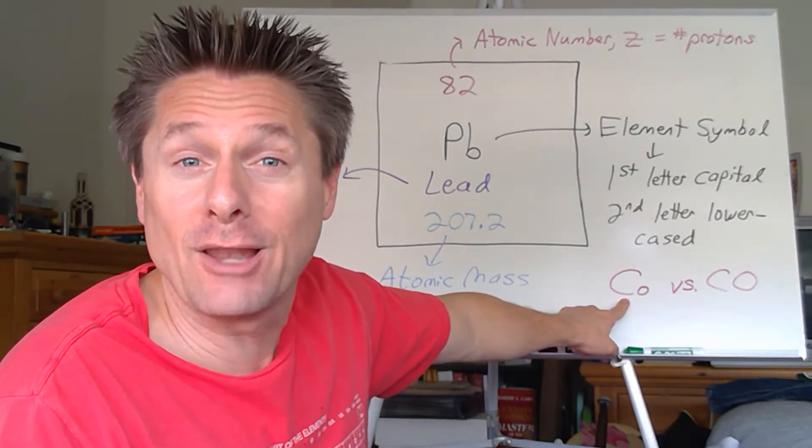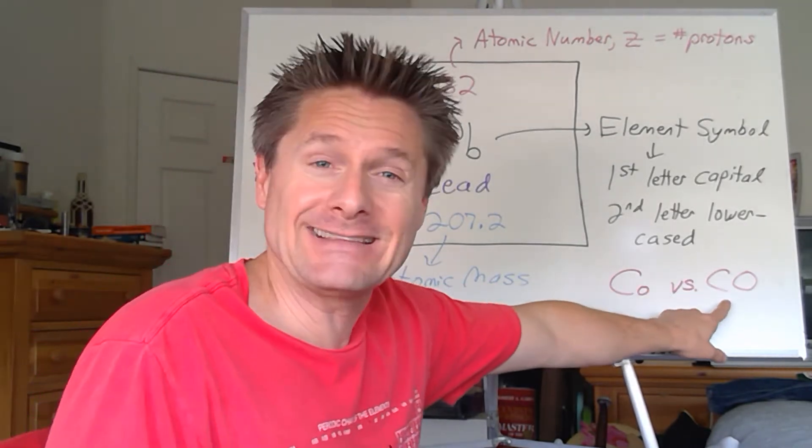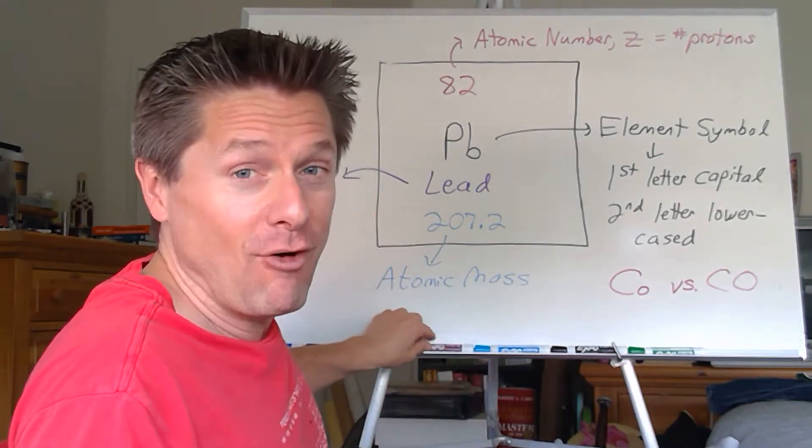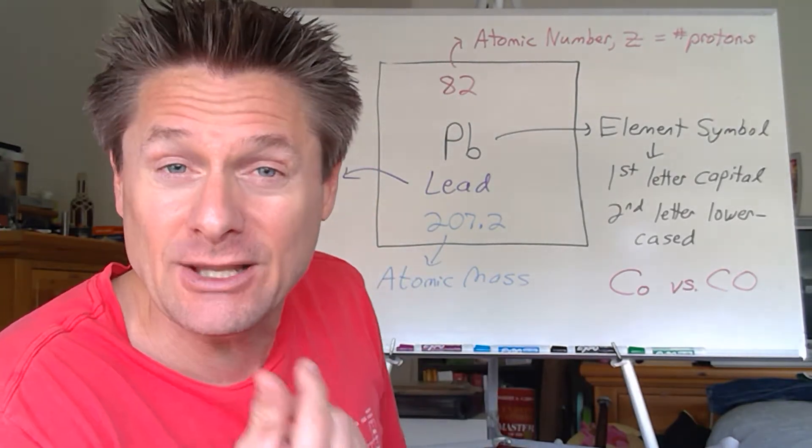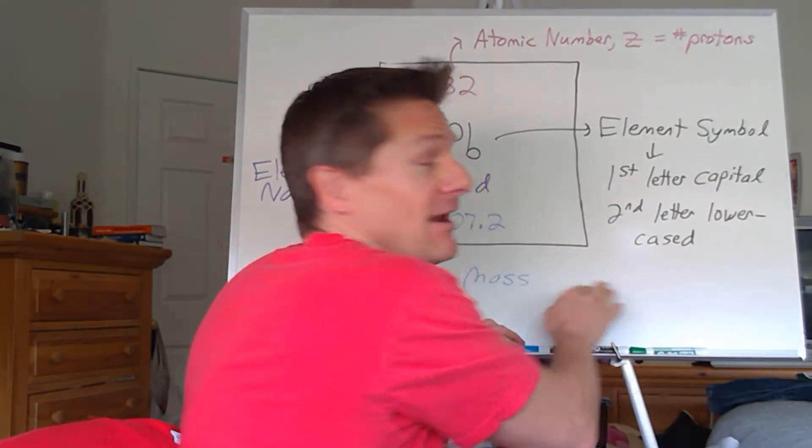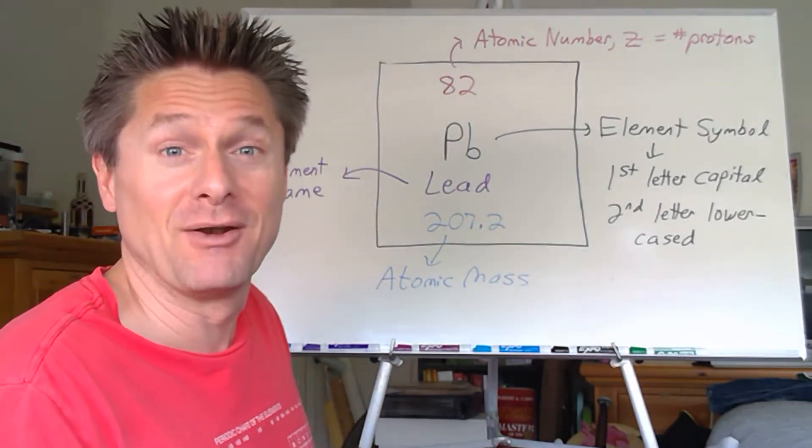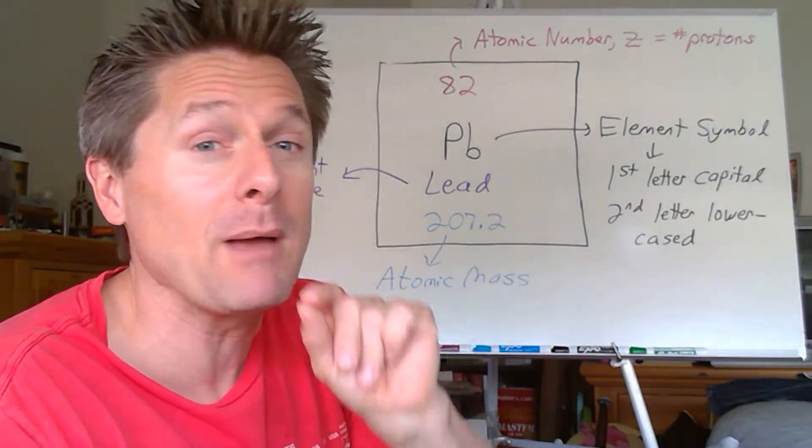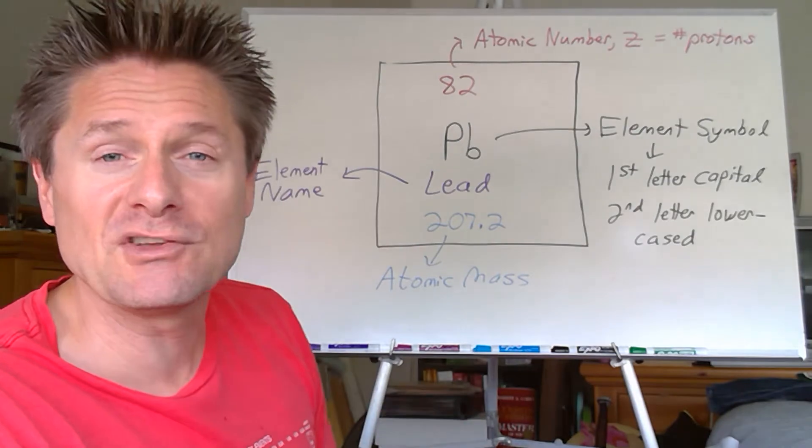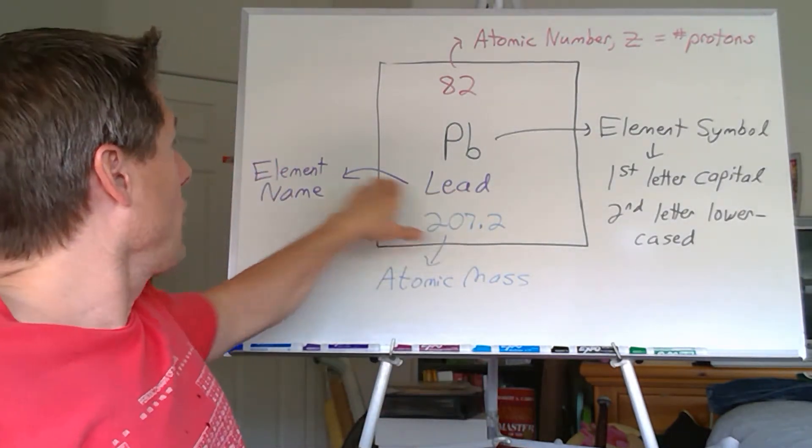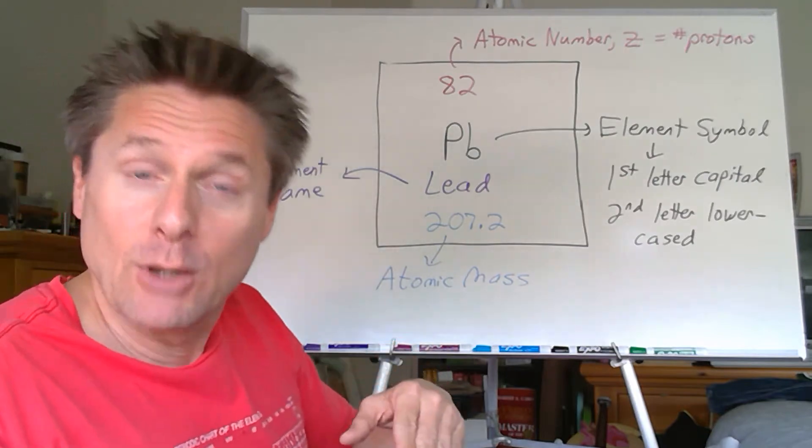Let's say you're a little sloppy—you got capital C, little o—capital C, capital O. Two totally different things! That's cobalt, the element cobalt. That's a compound, carbon monoxide, right? So if you are off or sloppy, or it's not clear in your writing, that could be very, very, very, very confusing for people, right?